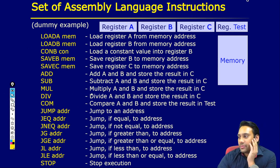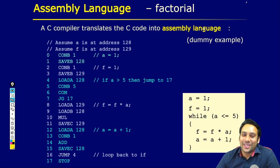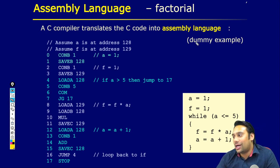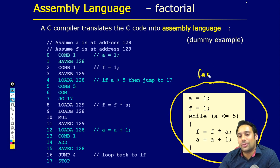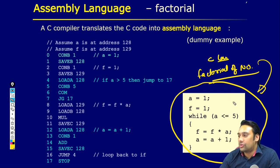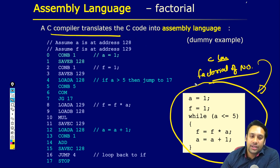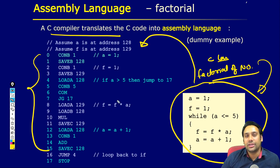Right now, do not get confused into this — इस पर confused होने की जरूरत नहीं है. Just for your reference, I have given this program. इस assembly code को use करके I have written this factorial function. If you remember, we can find the factorial of a number — हमारे पास factorial of a number का program है.